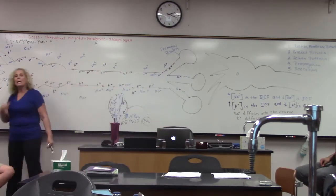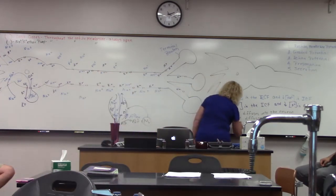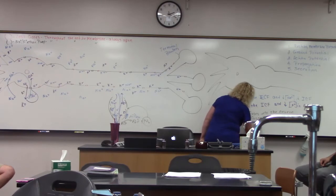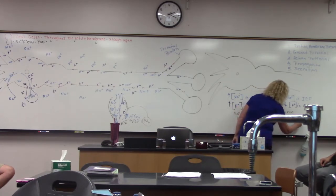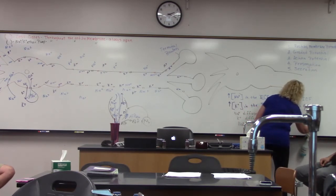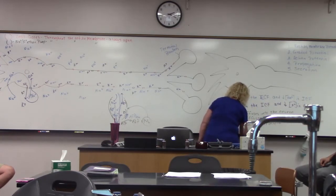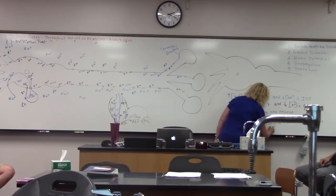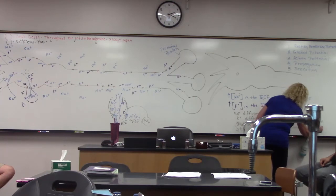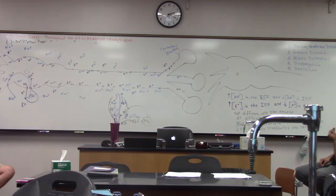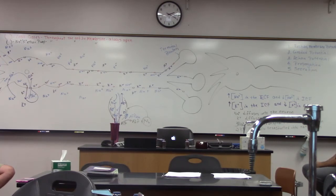So sodium is diffusing in, potassium is diffusing out, and then the pumps are actively transporting in the opposite direction. We actively transport three sodium out and two potassium back into the neuron, keeping a high concentration of sodium in the extracellular fluid and a high concentration of potassium in the intracellular fluid.